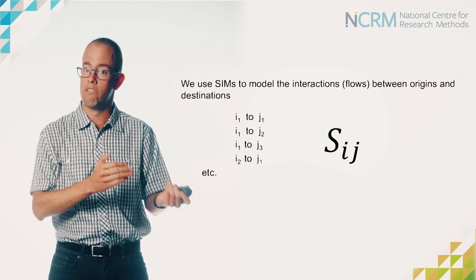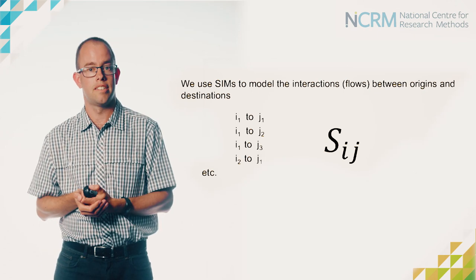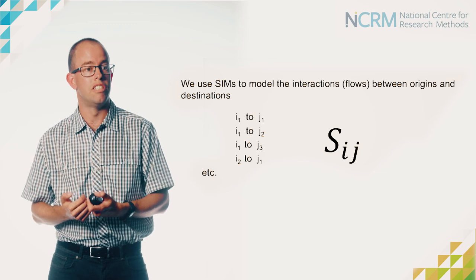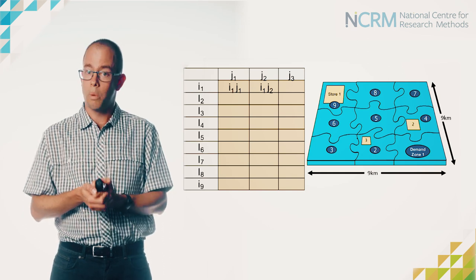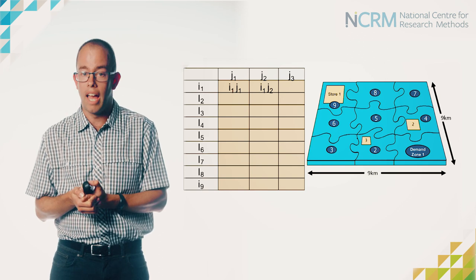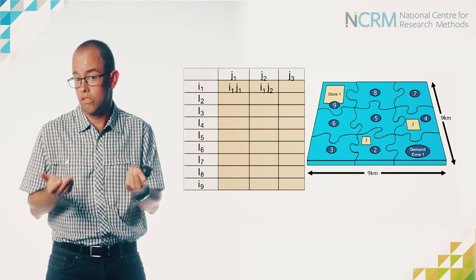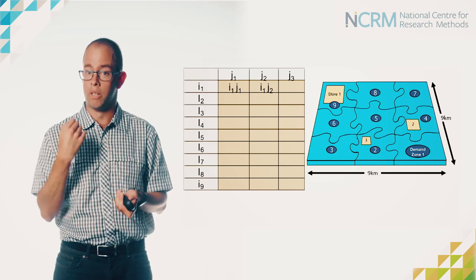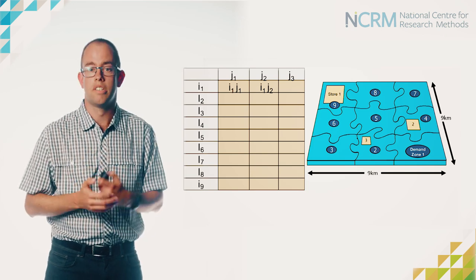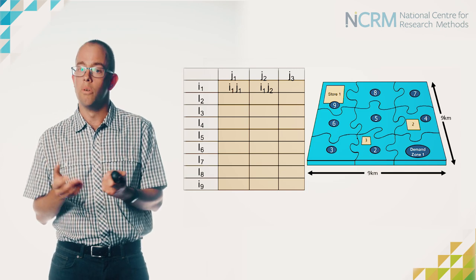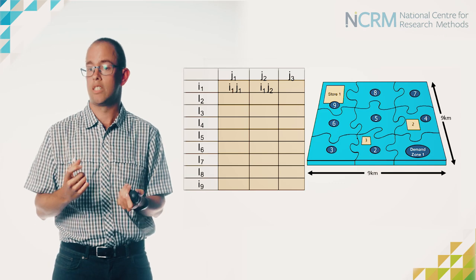The flow from i1 to j1 — origin 1 to destination 1; from i1 to j2 — our first origin to our second destination; and so on, right the way through all of our different origins and destinations. So in the example you worked with earlier, we've got 27 possible flows — that's the flow from every one of our nine origin or demand zones to every one of our three destination stores. We typically think of this in the form of a matrix, organised with our origins down the left-hand side and our destinations along the top, and that matrix in the middle is where we estimate our flows.